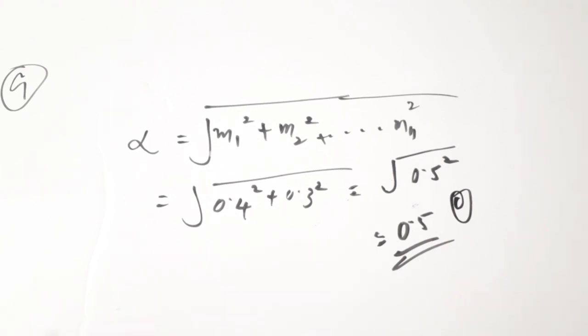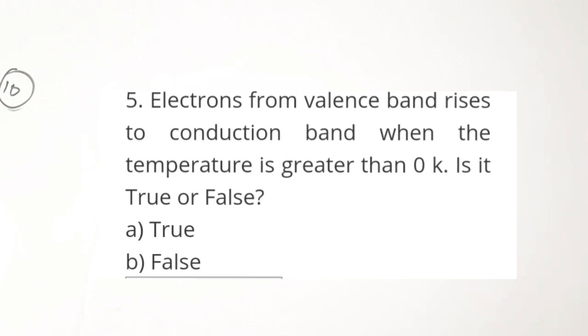Question number 10: electrons from the valence band rise to the conduction band when the temperature is greater than 0 Kelvin. This is a true/false type question. The correct answer is A — True. Whenever there is a temperature above 0 Kelvin, valence electrons break their bonds and move to the conduction band, where they start conducting.